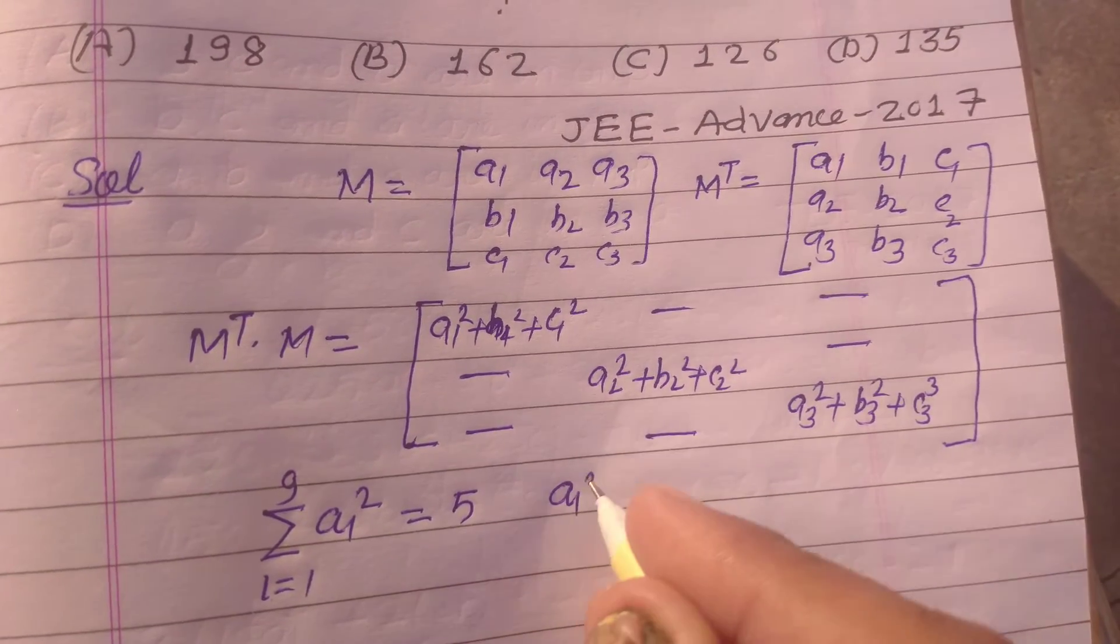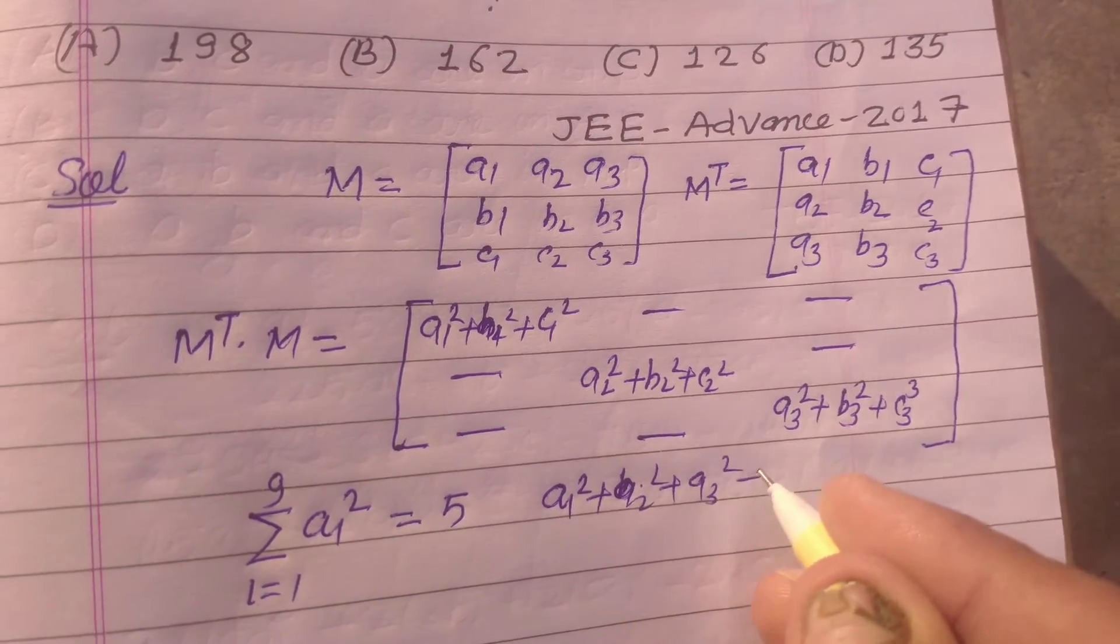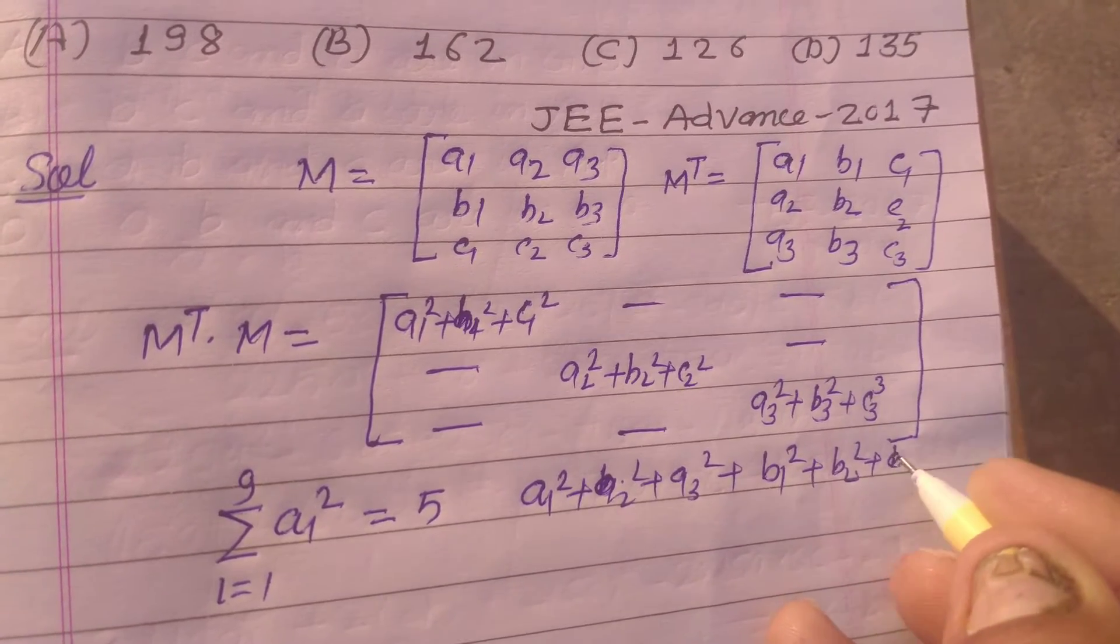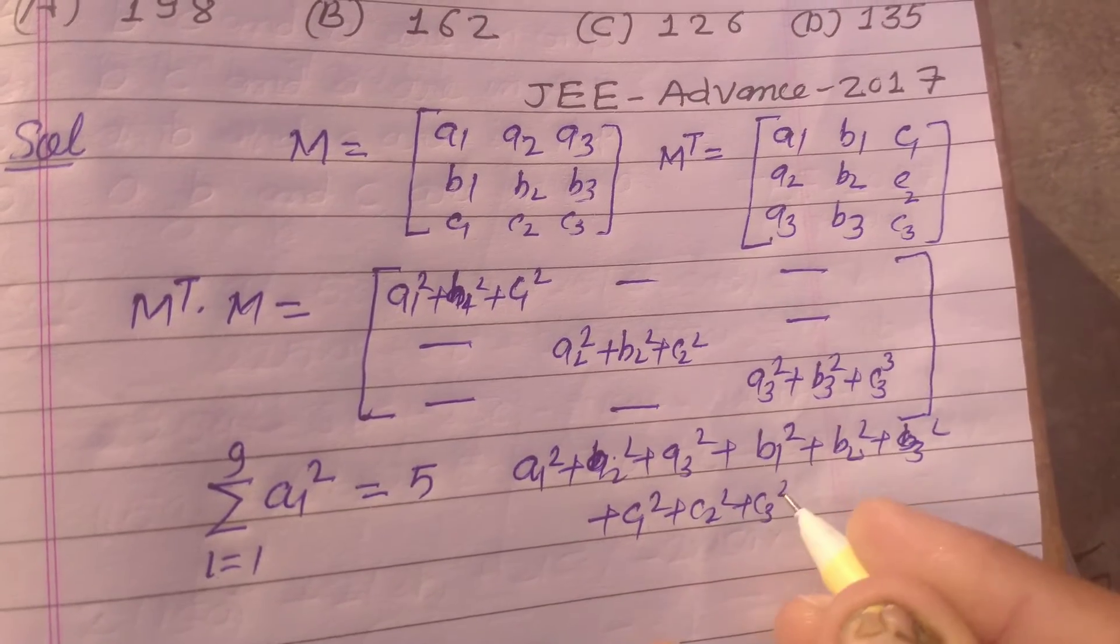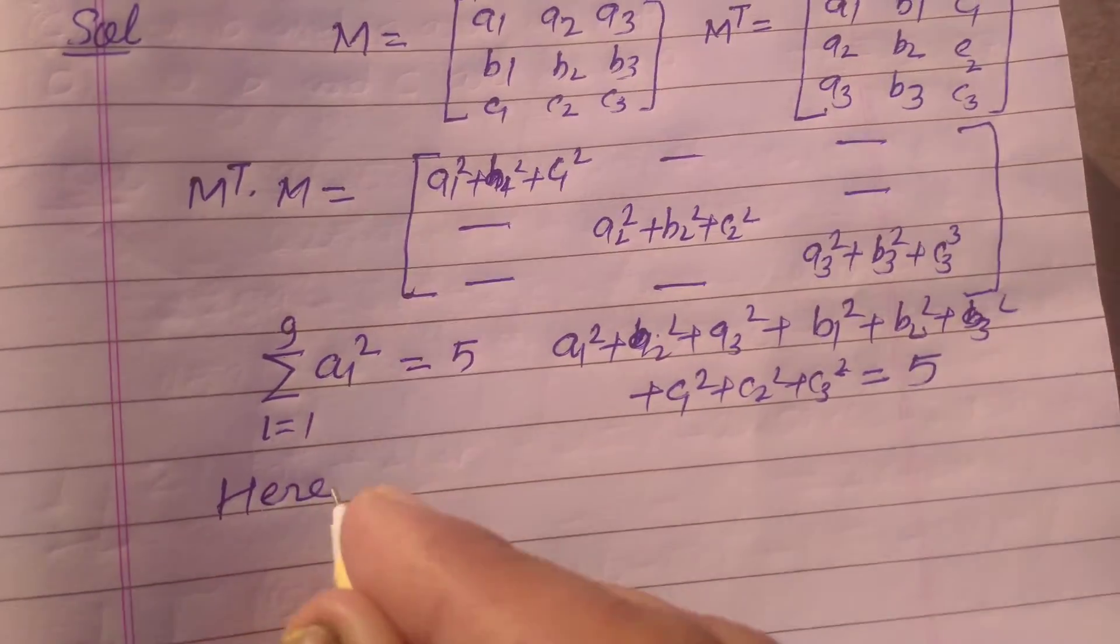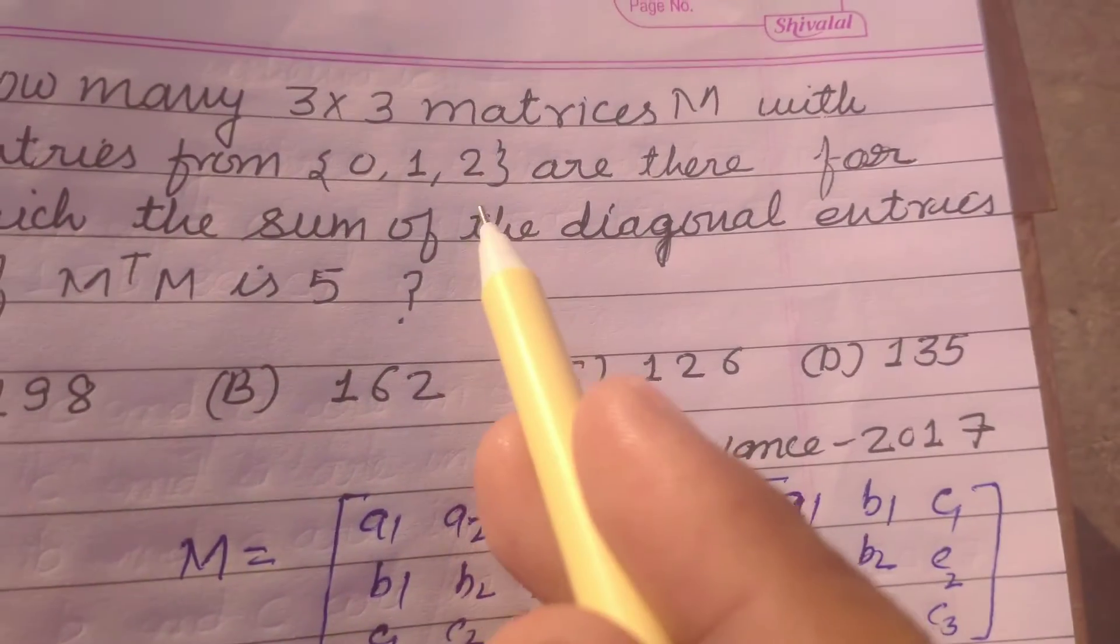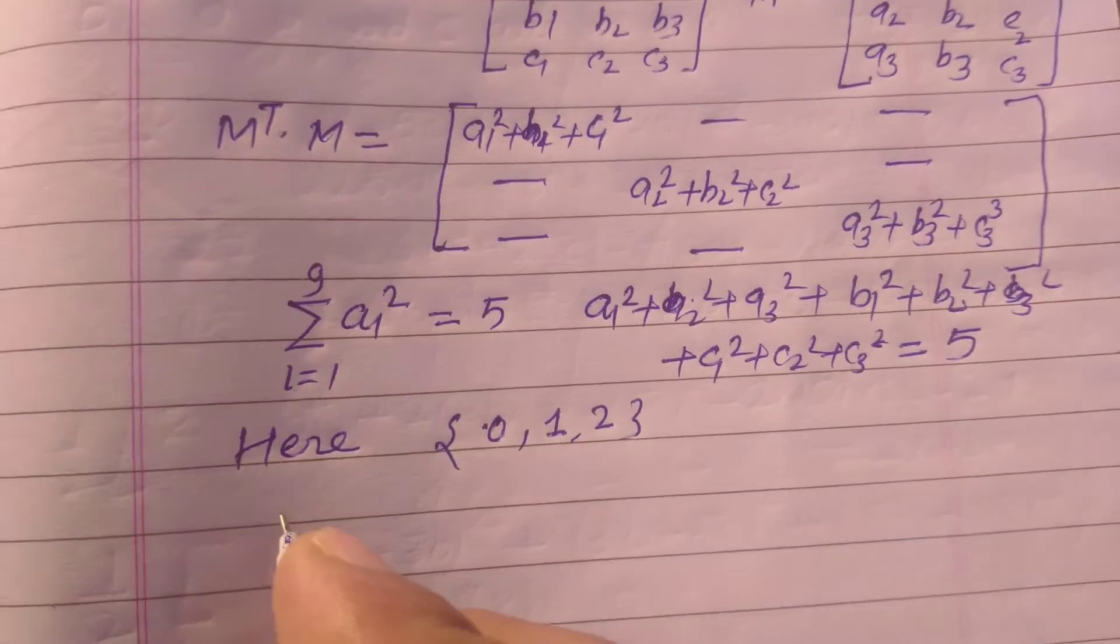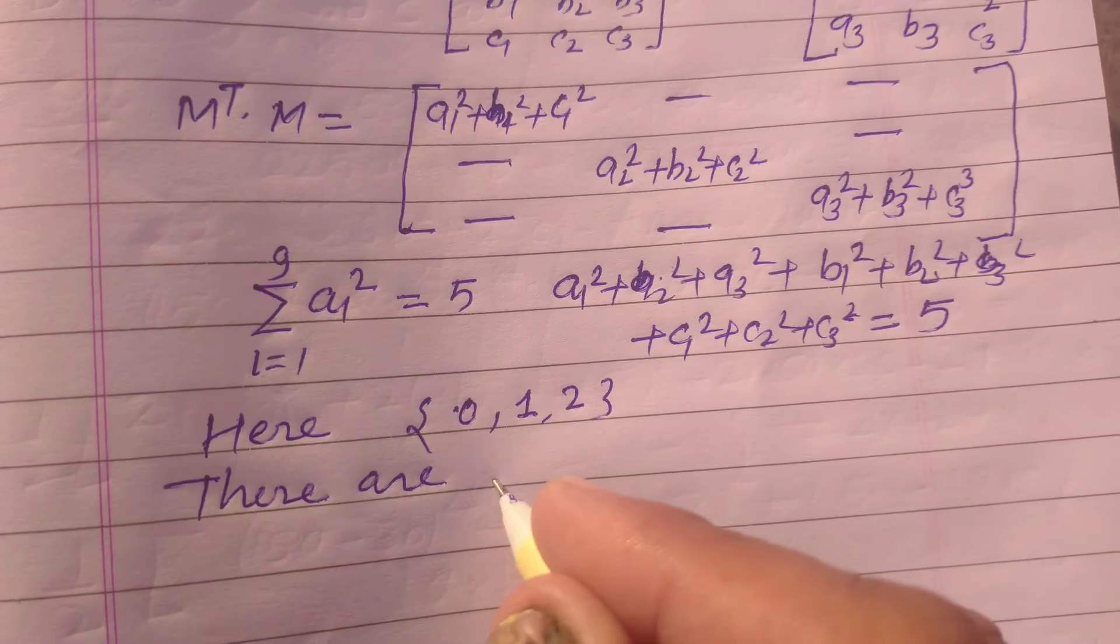So here sigma AI square from I equals 1 to 9 equals 5. It means A1 square, A2 square, A3 square, B1 square, B2 square, B3 square, C1 square, C2 square, C3 square is 5. So here the set is given to us which is 0, 1, and 2. So there are two possibilities.